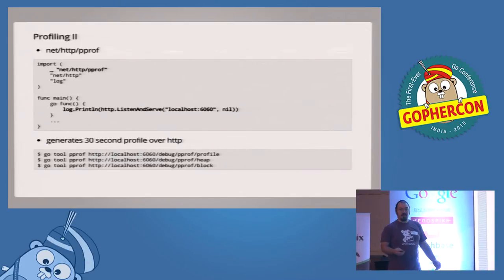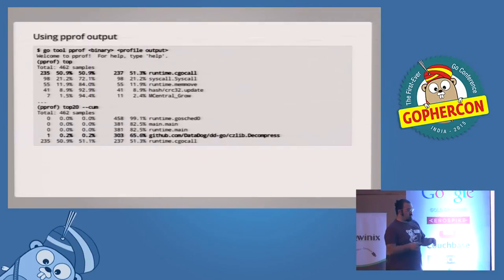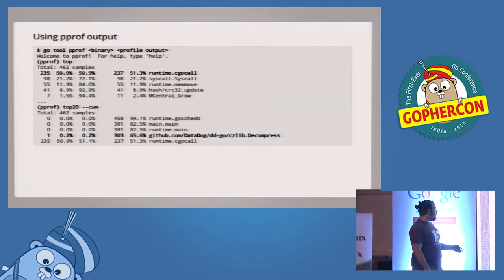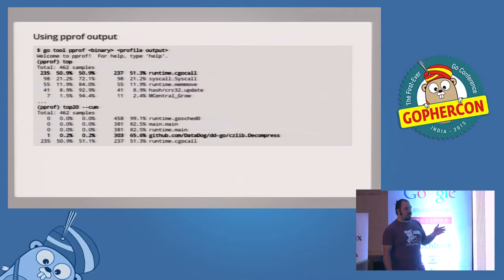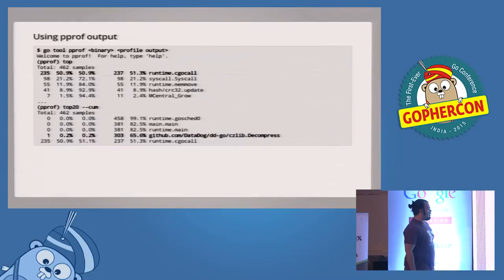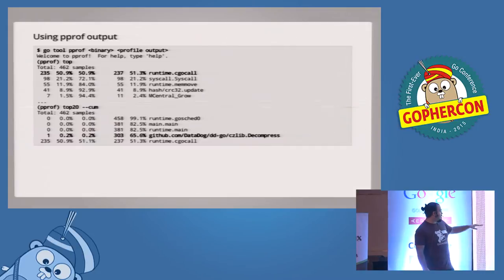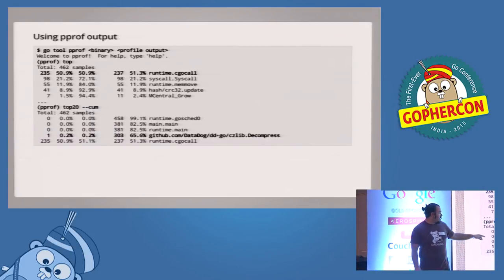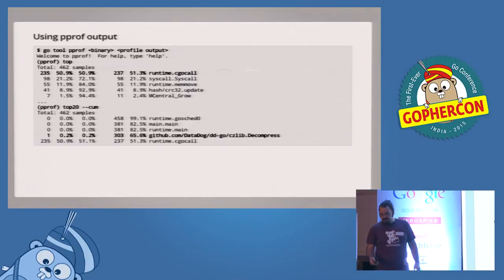Here we have a pprof shell — we've either saved it to a file or run go tool pprof against an HTTP endpoint. You can take the top samples. This was a program that read from a queue with zlib-compressed messages, decompressed them, and wrote them to disk. You can see it's using a lot of cgo calls because we're using a cgo decompression library. The top 20 shows our czlib using 65%, which is expected since that's really all it's doing.